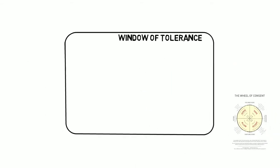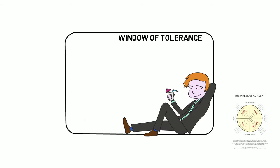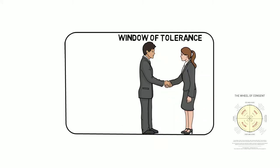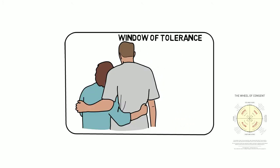How to stay and widen in your window of tolerance. The window of tolerance is a term used to describe the zone of arousal in which a person is able to function most effectively. When a person is within the window of tolerance, the brain is functioning well and can effectively process stimuli.